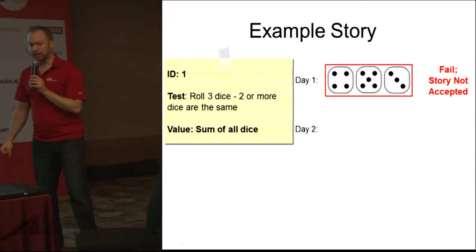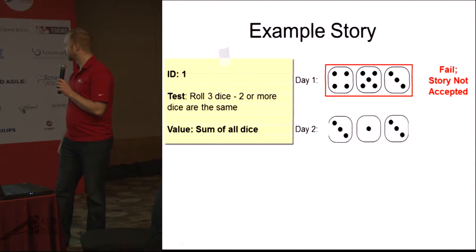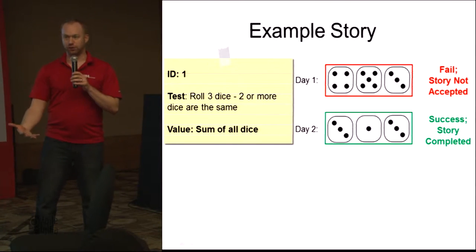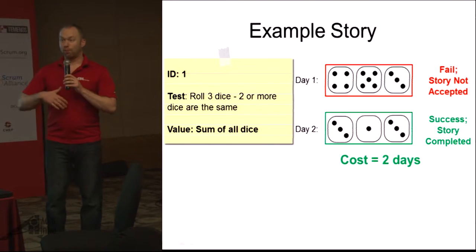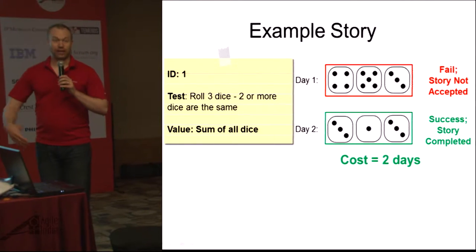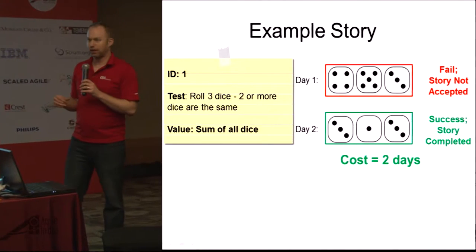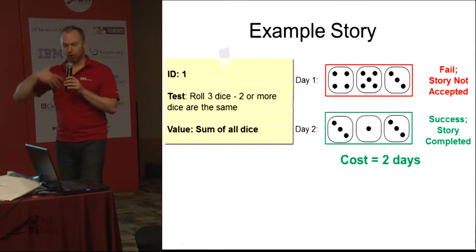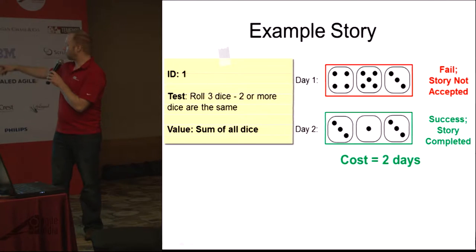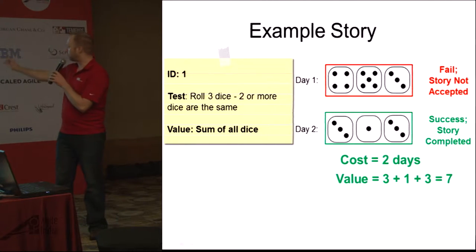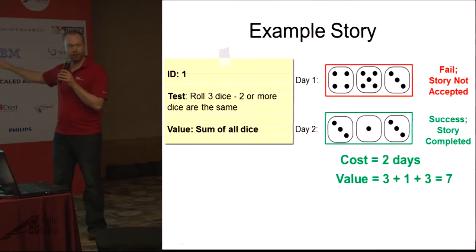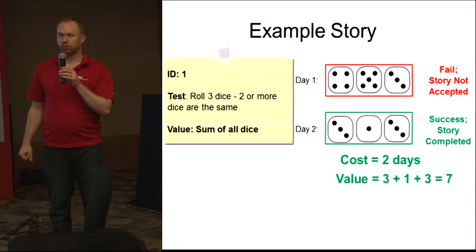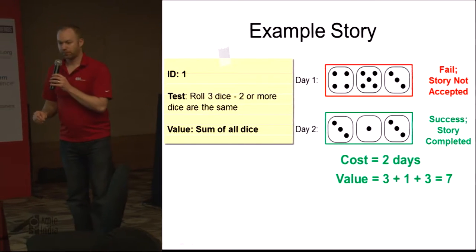We move it and put it out into the market. We don't know what kind of value we get from this user story until we get it out there and learn from our customers. The value we receive is going to be the sum of all dice on that last roll — for example, three plus one plus seven. Questions so far? We're going to do a couple more examples.